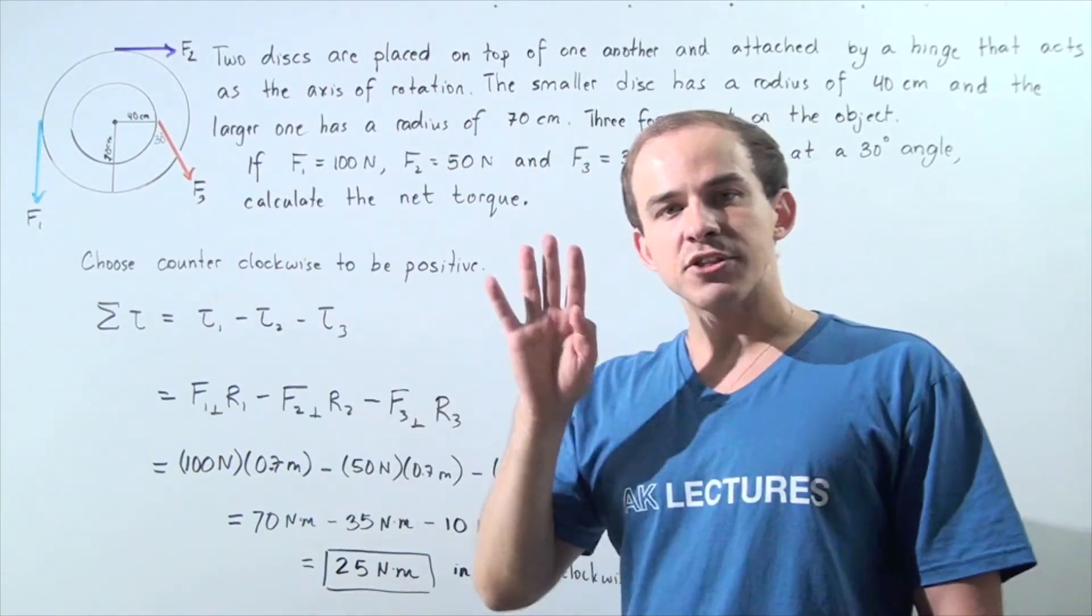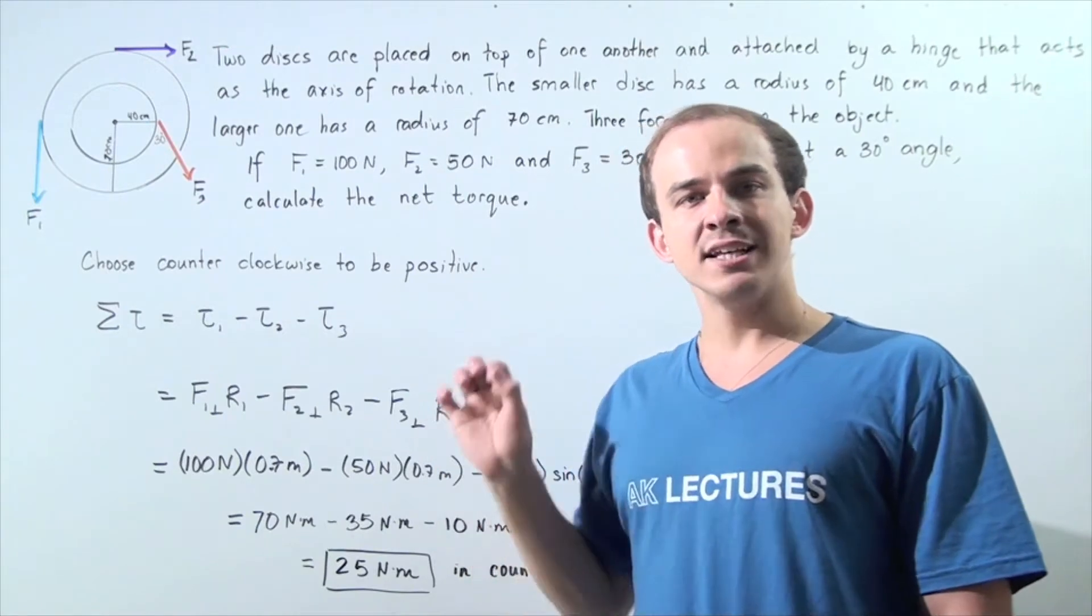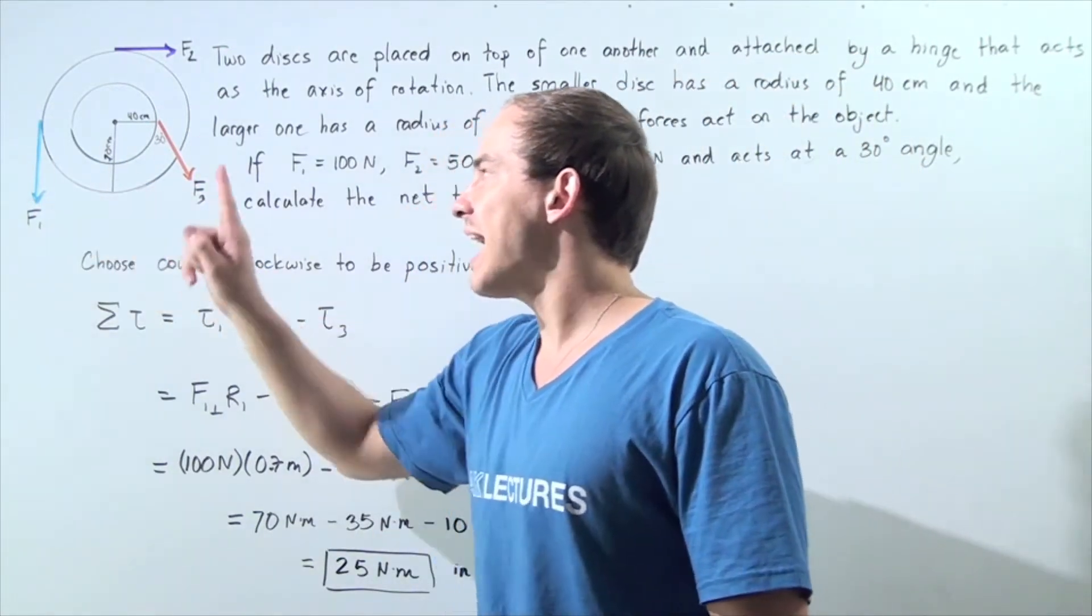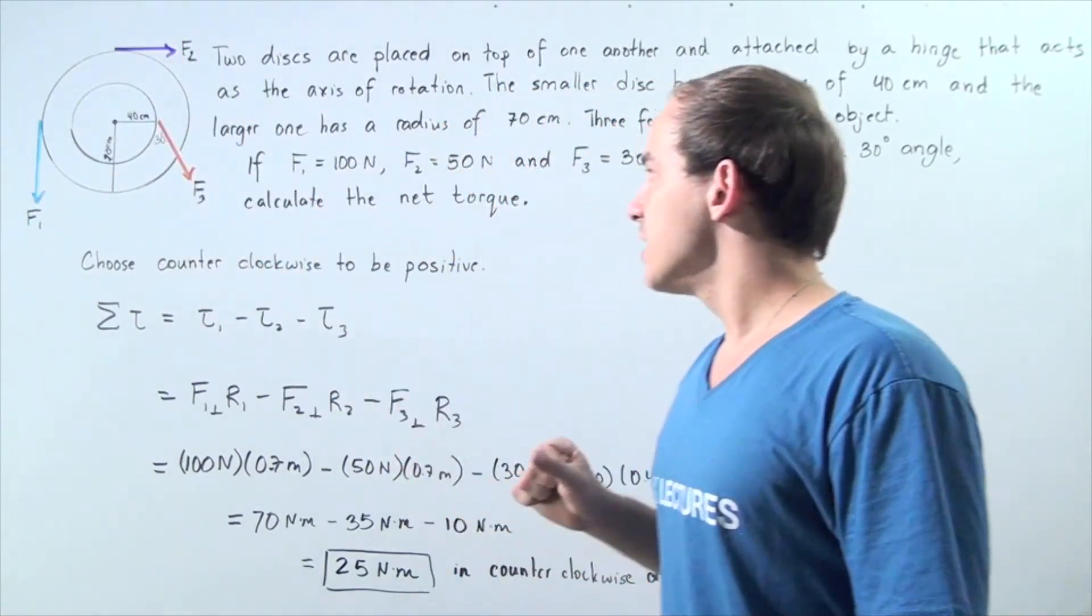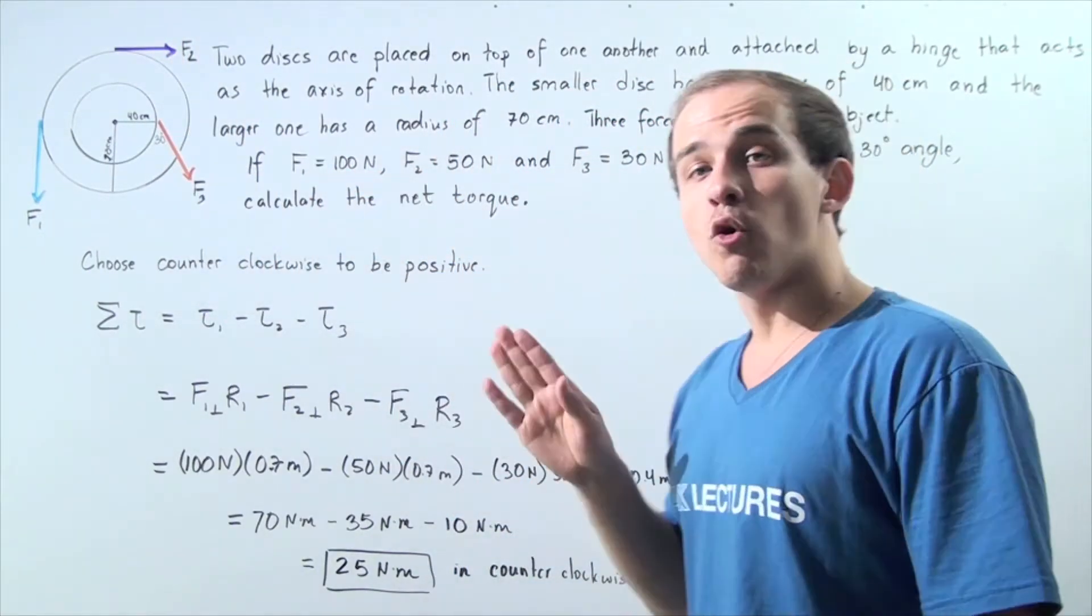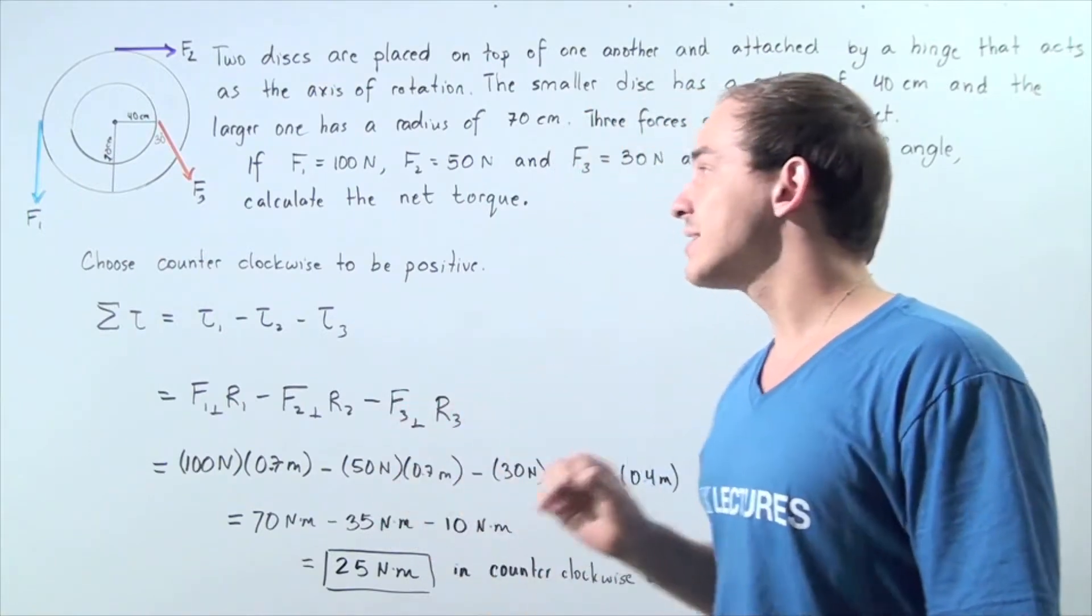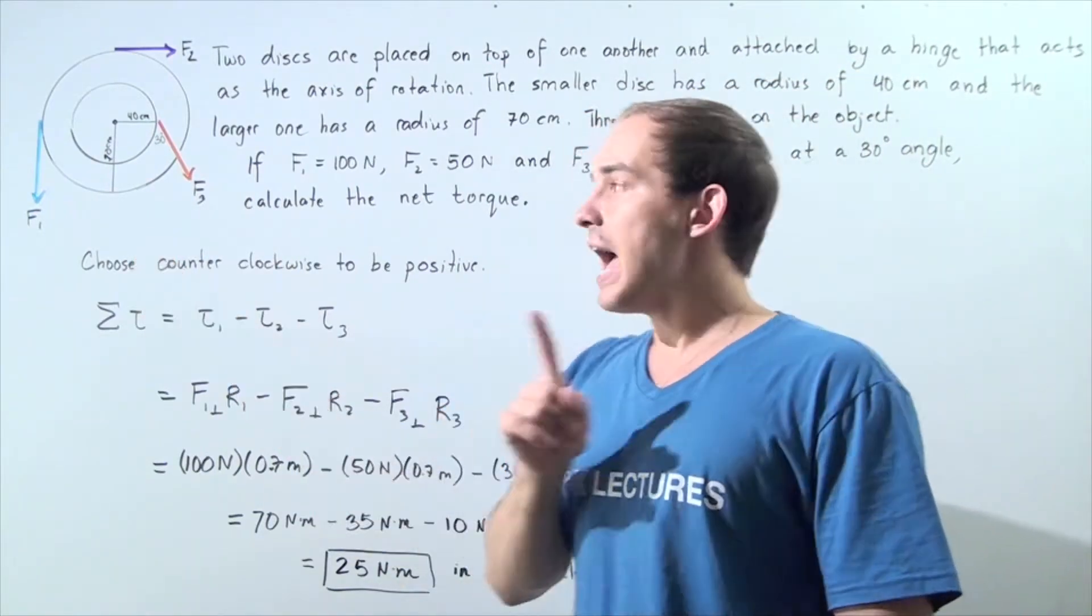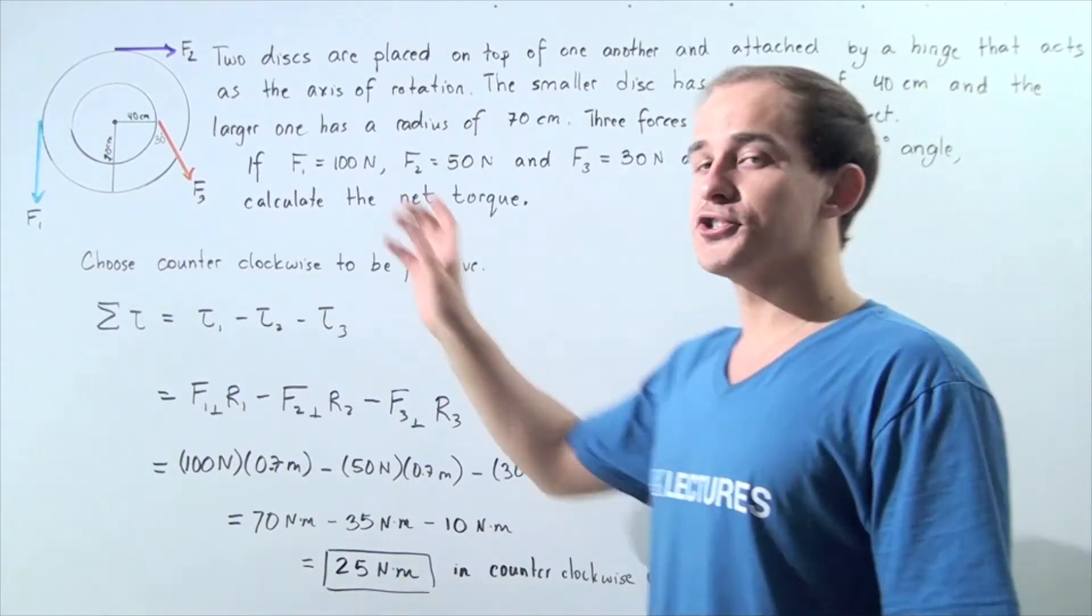Now, let's suppose that three forces are acting on our system of two disks. Force number one is acting on the larger disk and has a magnitude of 100 newtons. Force number two has a magnitude of 50 newtons and also acts on the larger disk. And force number three acts on the smaller disk.